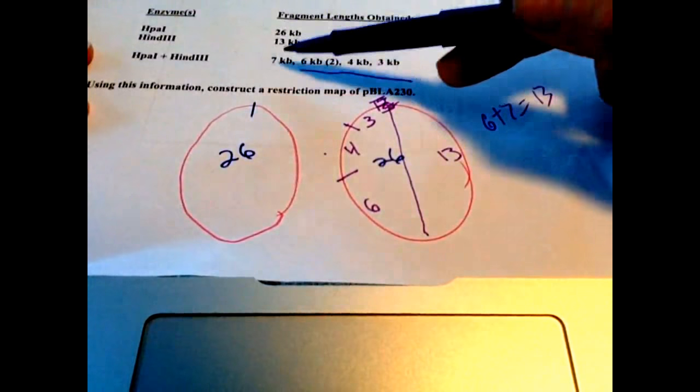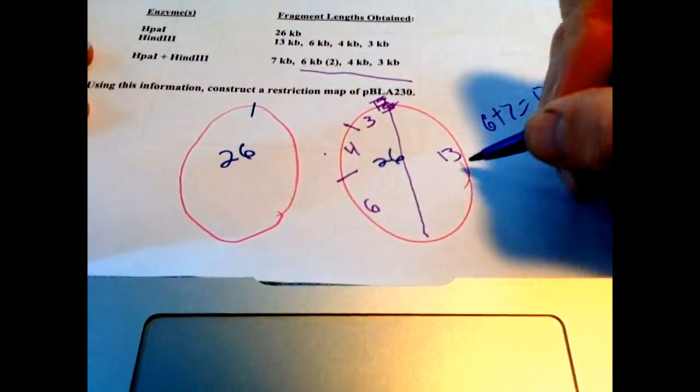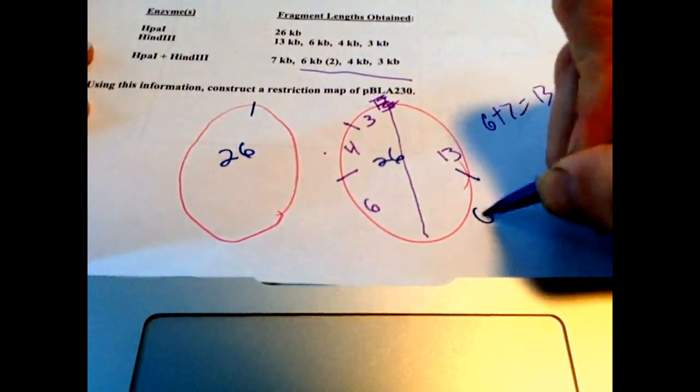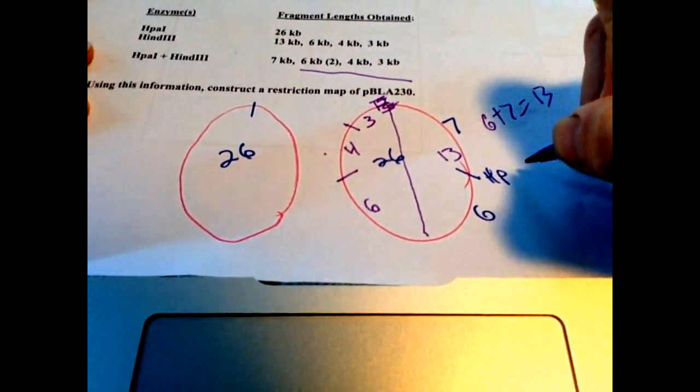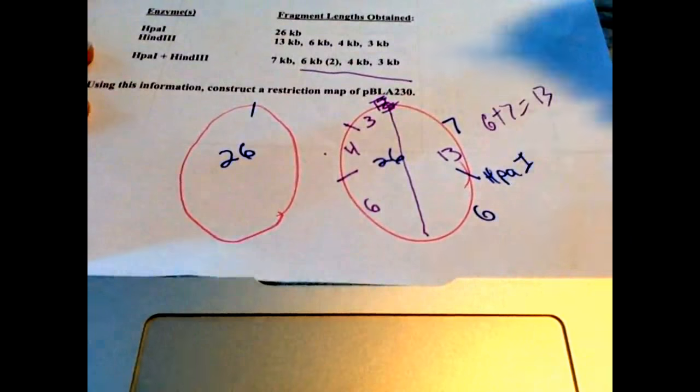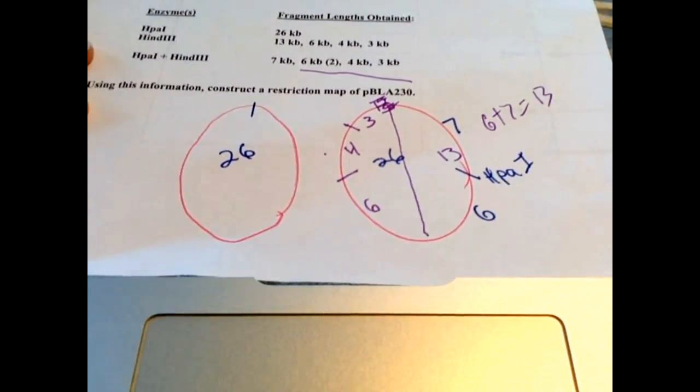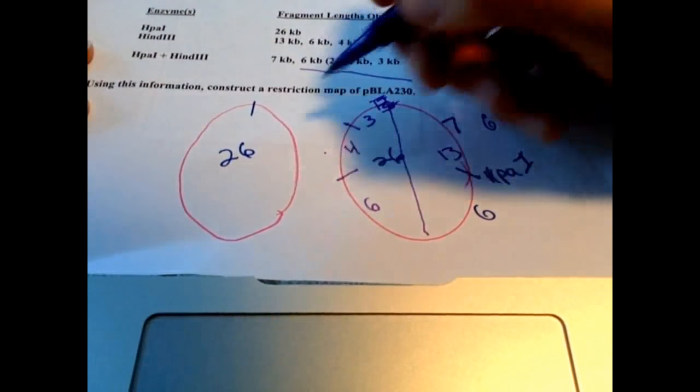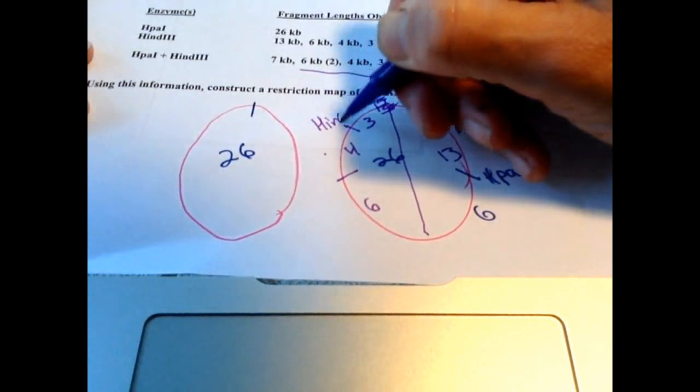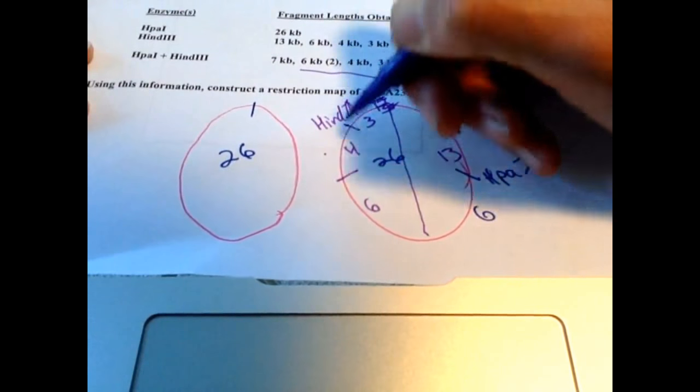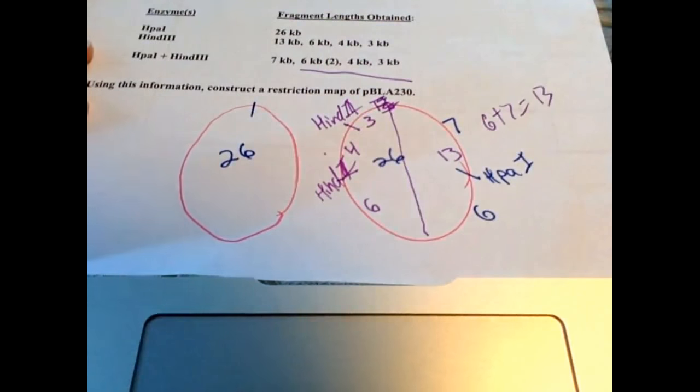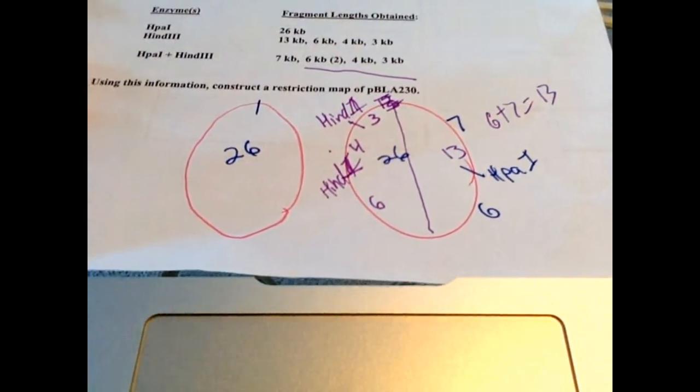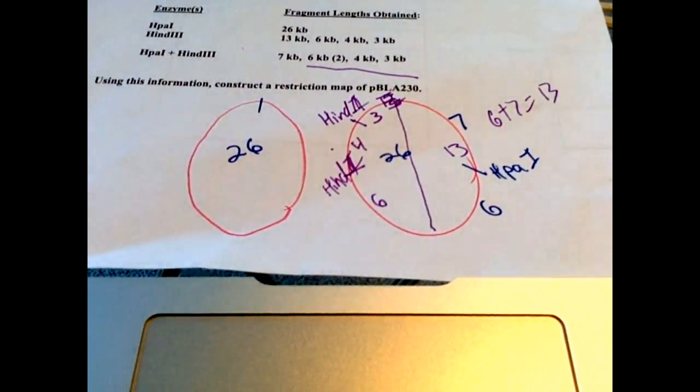So that means the one and only cut that is made by HEPP1 has to dissect that 13. So it has to split it into a 7 and a 6, so slightly half, right, 6 and 7. So this will be your HPA1, and then these are all from hind, hind 3. Alright, so that's how you would do the second one.